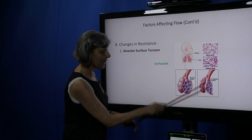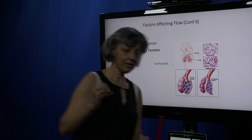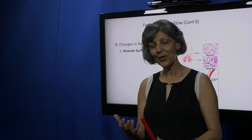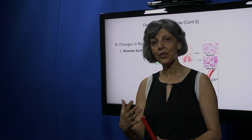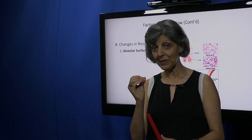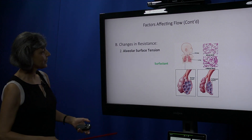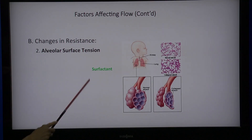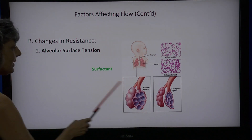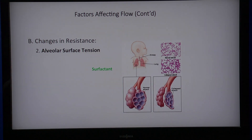In normal adults this works well, but in premature babies whose lungs are not fully developed, there is deficiency in surfactant. Without enough surfactant, the lungs can collapse, definitely decreasing airflow. Remember: surfactant decreases surface tension and allows good airflow. Deficiency in surfactant leads to collapse of the lung and reduced airflow.